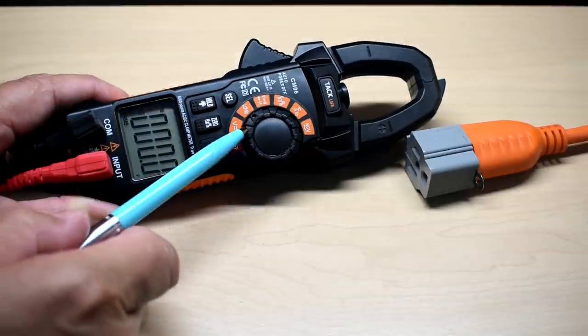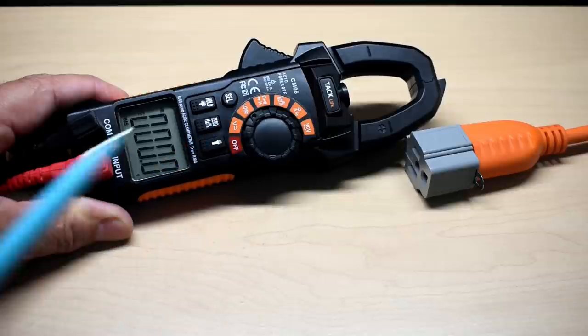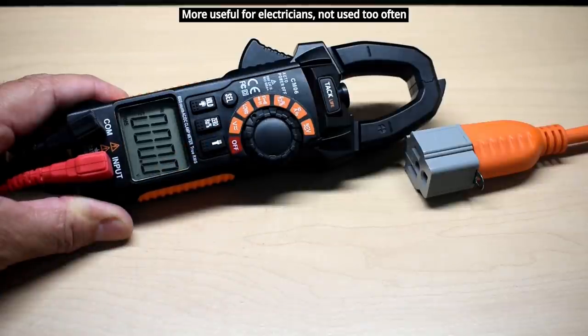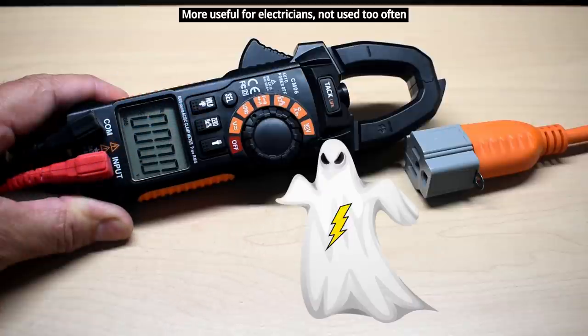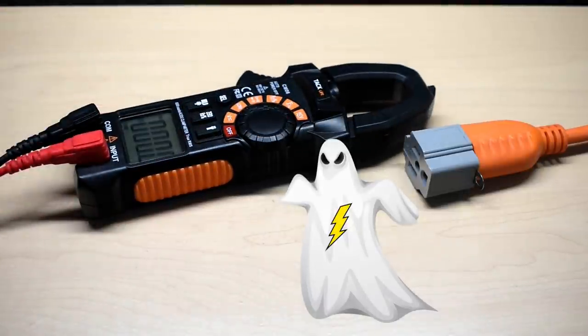The next spot when you rotate the knob puts us on the low Z setting also known as low impedance and that setting is used to look for ghost voltage or phantom voltage. So let me explain what I'm talking about.